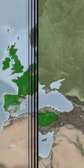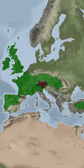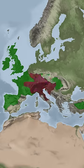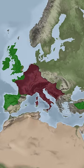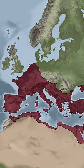Starting with the 4th century BC, they began to face external pressures, including Roman expansion. The Romans conquered many Celtic regions such as Gaul and parts of Britain, leading to cultural assimilation and the decline of Celtic languages.